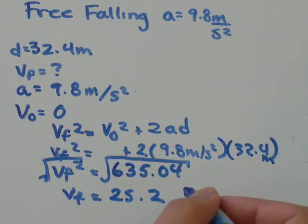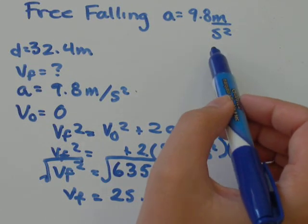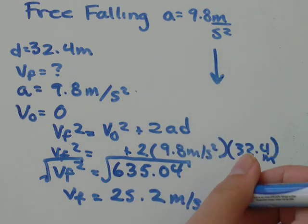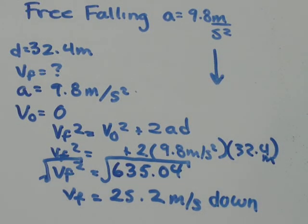Think about your units. Velocity is meters per second. And we're thinking about dropping a stone. So you could say that meters per second down would be perfectly fine units.